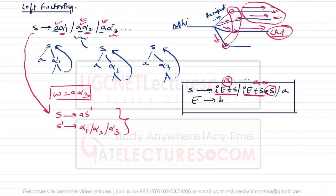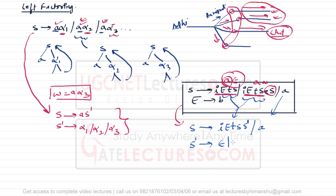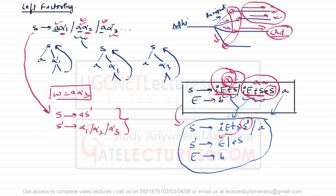To eliminate this left factoring we follow the previous rule. The grammar can be rewritten as: S derives i e t S S', where S' is a new symbol. Then S' can derive epsilon slash e S. If S' gives epsilon, we generate the first production; if S' gives e S, we generate the second production. The production A derives a remains as is. Now E can derive b, and in this grammar there is no left factoring.